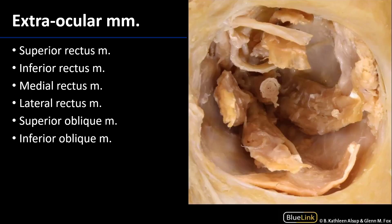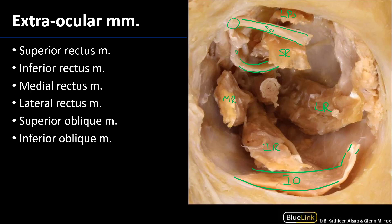Here is a view of the orbit with the eye enucleated. We can see the superior rectus muscle, inferior rectus muscle, medial rectus, and lateral rectus. Here is the levator palpebrae superioris muscle. Here is the tendon for the superior oblique going through the trochlea, and this is a continuation of that tendon — and here we can see the muscle belly, which is very relaxed. Over here we can see the muscle belly of the inferior oblique muscle going up to its tendinous attachment. Central to all of this is the optic nerve, cranial nerve II, and we can see the central retinal artery within that.